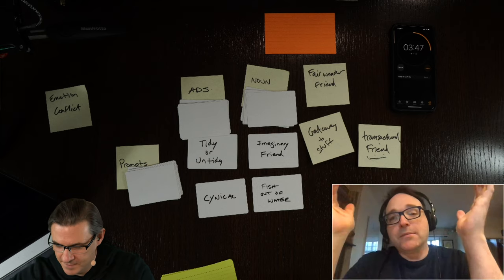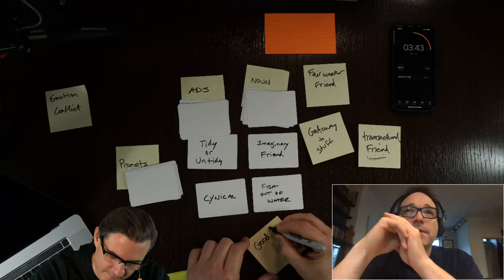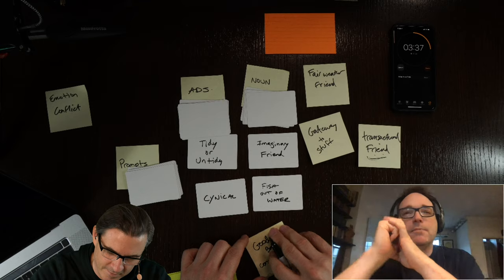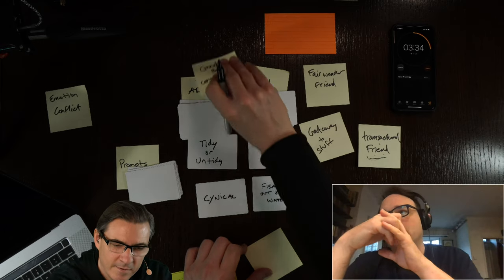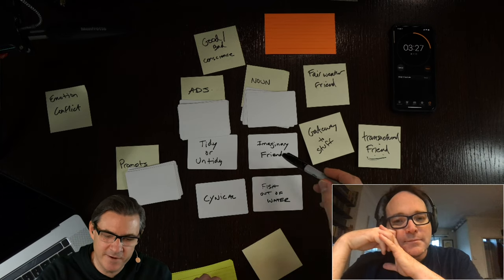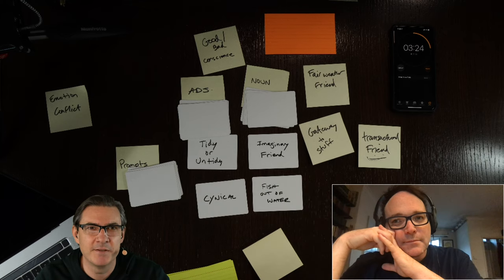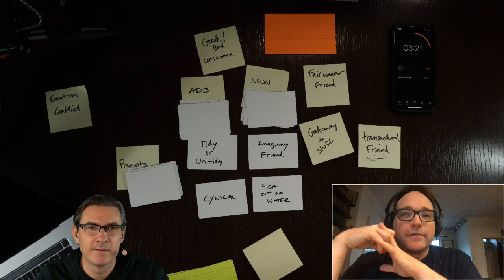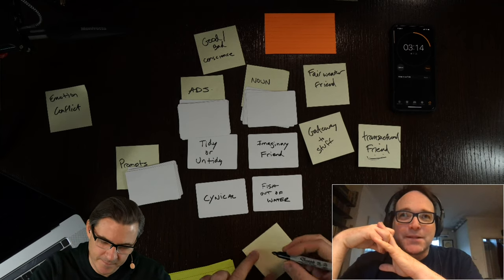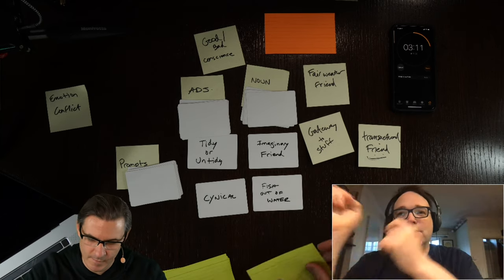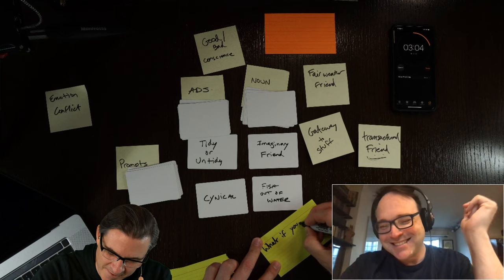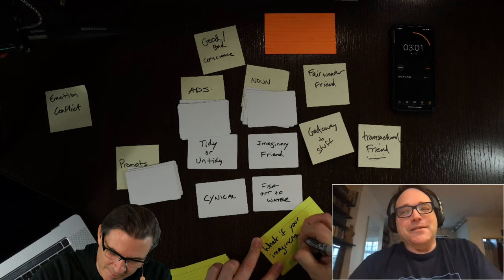It could be like Monsters Inc. — where do imaginary friends go when you stop thinking of them? What if they don't just vanish? What if they all congregate, like a Hopper painting of a bar where all the imaginary friends people have forgotten are sitting around? What if imaginary friends got together — people's imaginary friends meeting each other? Or would the imaginary friend create their own imaginary friend? Like mirrors within mirrors — you stop talking to them, they feel lonely, create their own, and soon there's this entire population of imaginary friends. It sounds very Pixar.